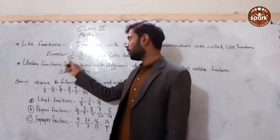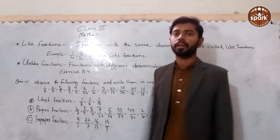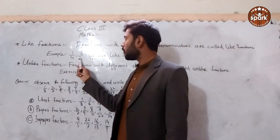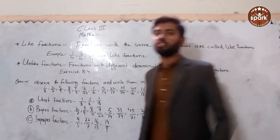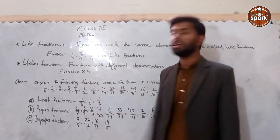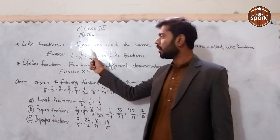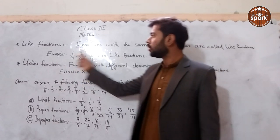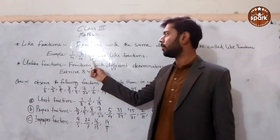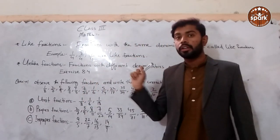For example, 1 upon 4, 2 upon 4, and 7 upon 4 are like fractions because the denominator is the same — it is 4 in all three. So these three fractions are like fractions. The numerator does not need to be the same; only the denominator needs to be the same.